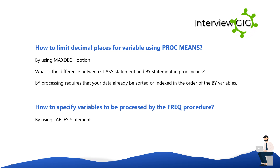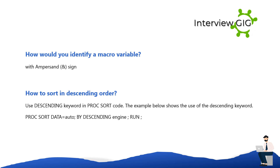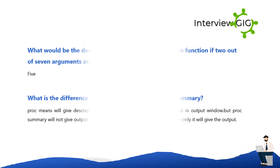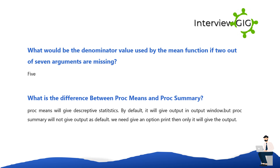What is the difference between CLASS statement and BY statement in PROC MEANS? BY processing requires that your data already be sorted or indexed in the order of the BY variables. How would you identify a macro variable? With an ampersand (&) sign. How to sort in descending order? Use the DESCENDING keyword in PROC SORT code, for example: PROC SORT DATA=AUTO; BY DESCENDING ENGINE; RUN. What would be the denominator value used by the MEAN function if 2 out of 7 arguments are missing? 5.